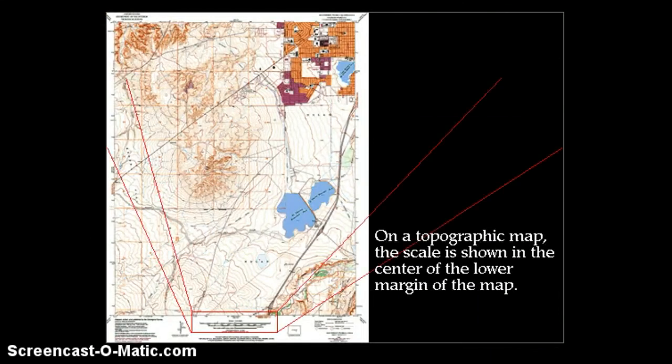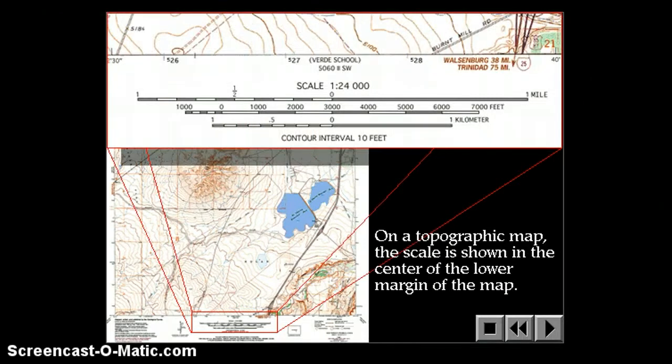On a topographic map, the scale is shown in the center of the lower margin of the map. So you find the scale here, and this is a blow up of it so that you can see it in detail.